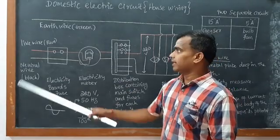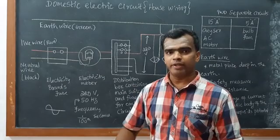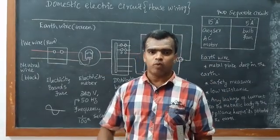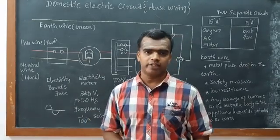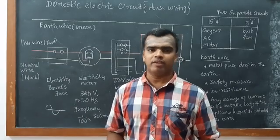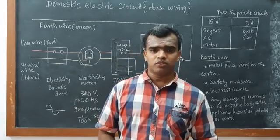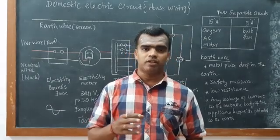Remember how we are making the earth wire: we bury one small pit. In that pit we put some metal plate and take one copper wire from that. We are giving an earth wire to each and every appliance, normally for high voltage appliances.